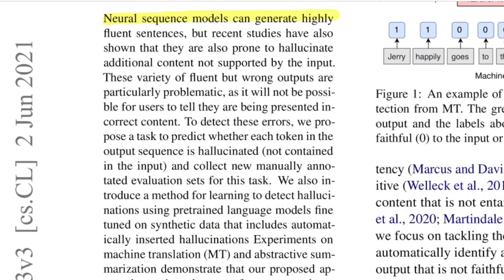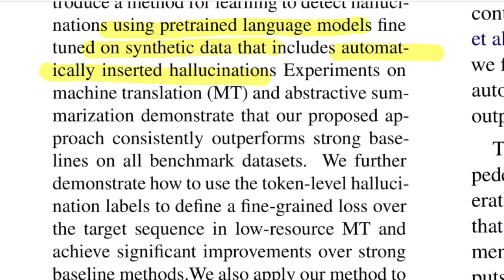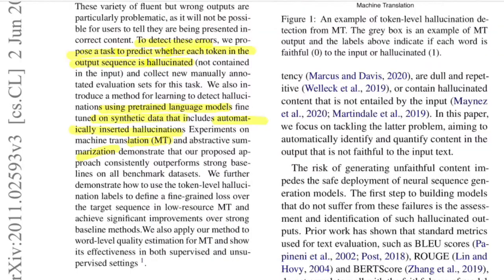From the abstract: neural sequence models can generate highly fluent sentences, but recent studies have shown they are prone to hallucinate additional content not supported in the input. To detect these errors, they propose a task to predict whether each token in the output sequence is hallucinated or not. For this, they fine-tune a pre-trained language model on synthetic data generated by automatically inserting hallucinations, and they mostly experiment with machine translation and summarization tasks.